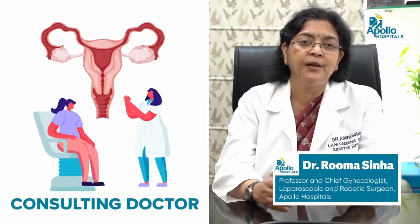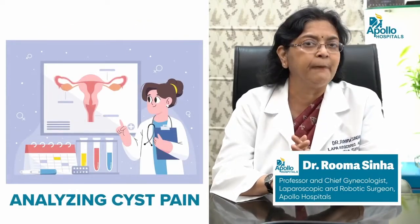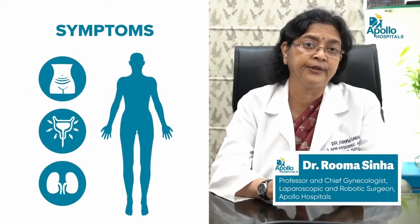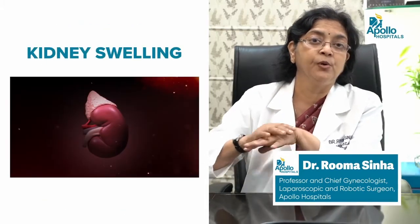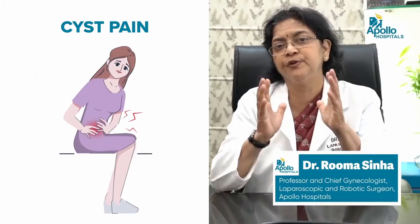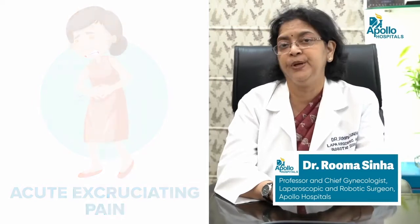Many times cysts may be totally asymptomatic — there is no symptom at all. Some women come to us with large cysts thinking they were just gaining weight. Cysts can also cause pressure symptoms: a large tumor inside the tummy can press onto the bladder, rectum, or even the kidneys. Pain is usually not just from the presence of the cyst but occurs when the cyst undergoes torsion, pulling on the ligament and causing acute excruciating pain. An endometriotic cyst can cause cyclical pain during periods, known as dysmenorrhea, and can even lead to infertility or heavy bleeding.